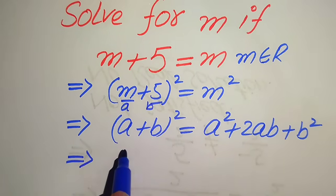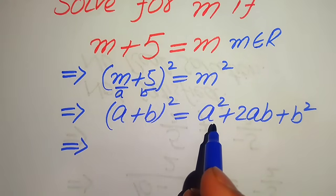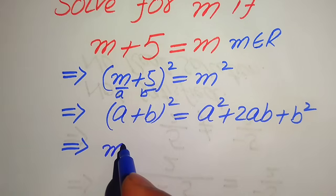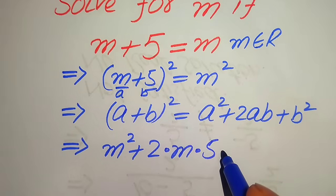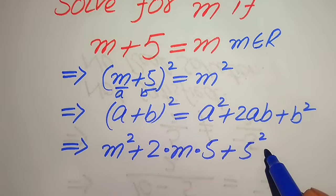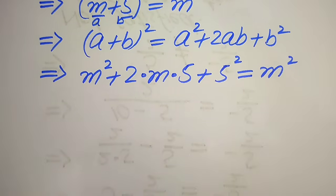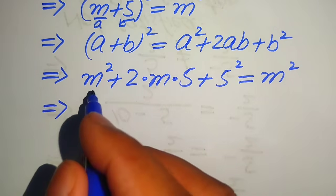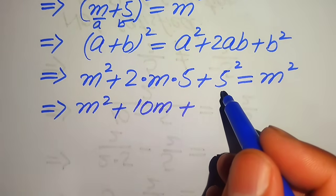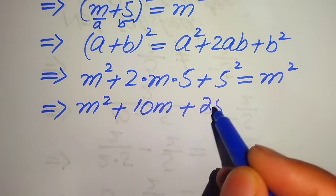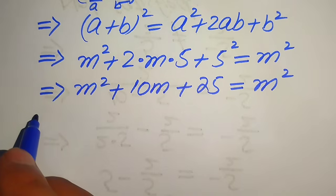We put these two values into the formula. After applying this formula we write it as m square plus 2 times m times 5 plus 5 square, and this is equals to m square. Simplifying, this is m square plus 10m plus 25 equals to m square.